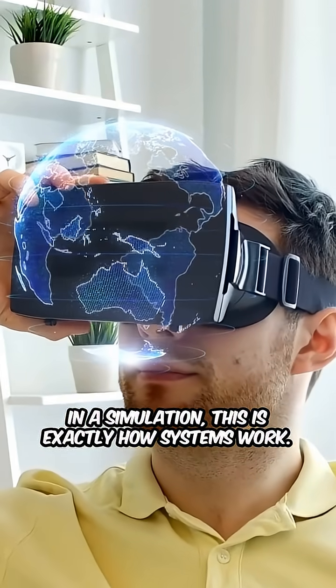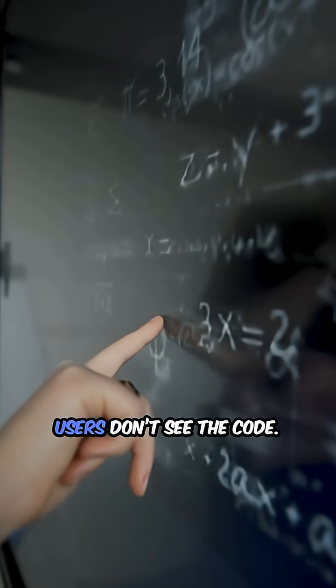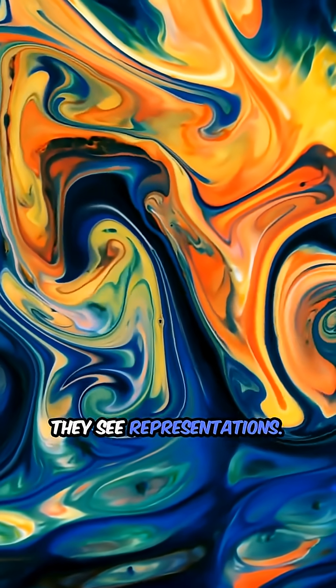In a simulation, this is exactly how systems work. Users don't see the code. They see representations.